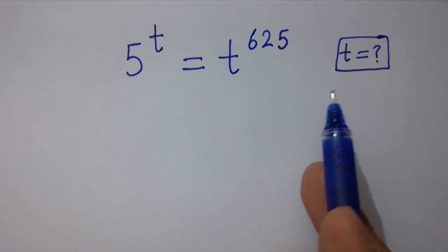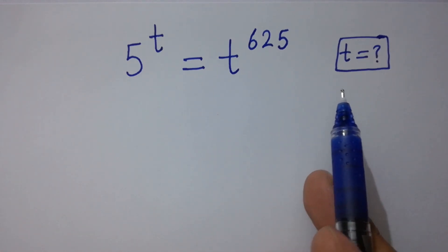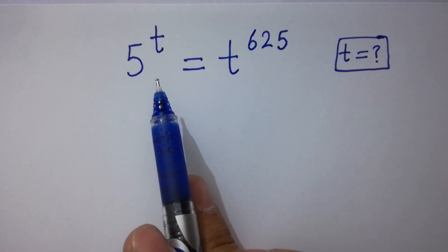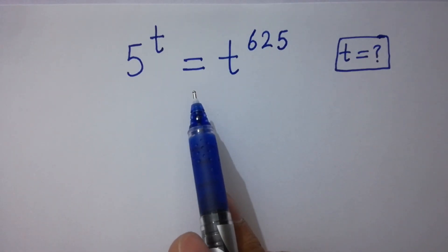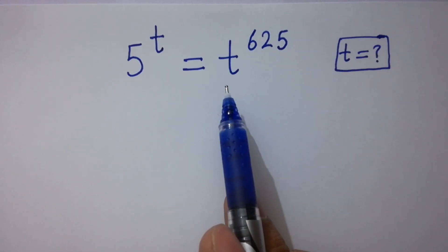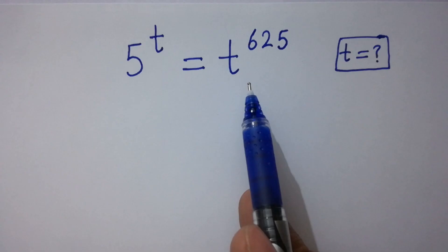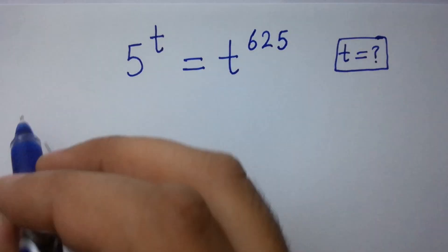Hello friends. Find the value of t if 5 to the power t equals t to the power 625. Let's have a solution.